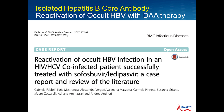She was eventually started on entecavir with good resolution of her HBV flare. To understand why this can happen, you have to appreciate the phenomenon of viral interplay between hep C and hepatitis B. Hep C exerts an inhibitory effect on hep B, as evidenced by studies finding lower HBV viral levels in co-infection compared with HBV mono-infected individuals. So when you take HCV out of the equation — as you do when using DAAs — HBV has the potential to come back in a fulminant way.